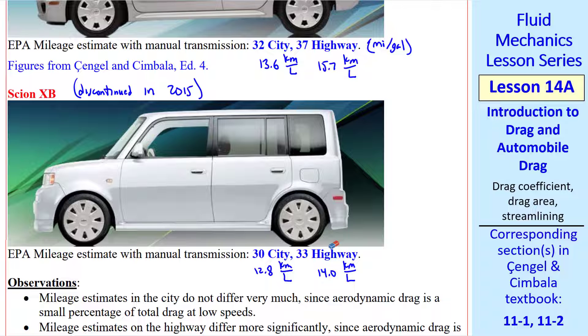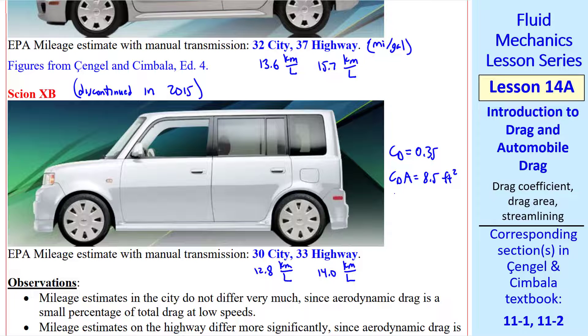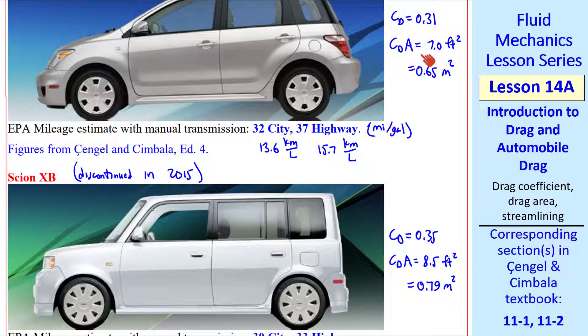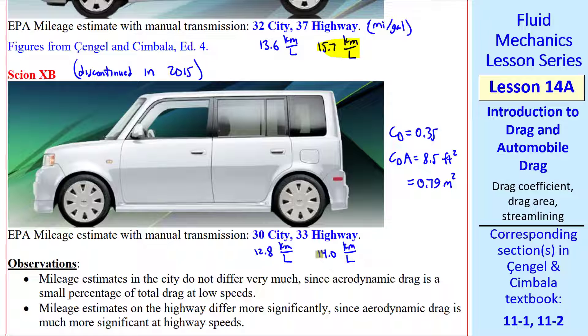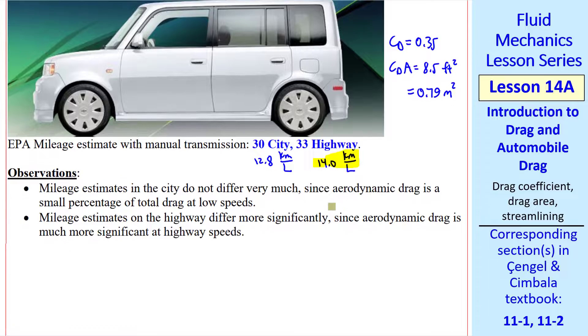Again, I put these values in metric units. The XB had a CD of 0.35 and a drag area of 8.5 square feet, or 0.79 square meters. These are significantly larger than those of the XA. Here are some observations. The city mileage estimates do not vary much, since aerodynamic drag is a small percentage of total drag at low speeds. But the highway mileages differ more significantly. Despite its boxy shape and its poorer fuel economy, elderly people like the XB because of its easy access and roominess.